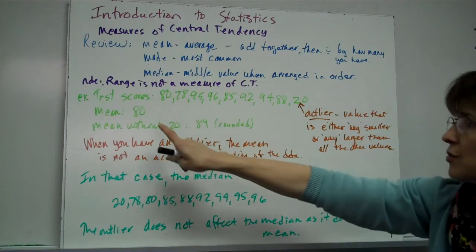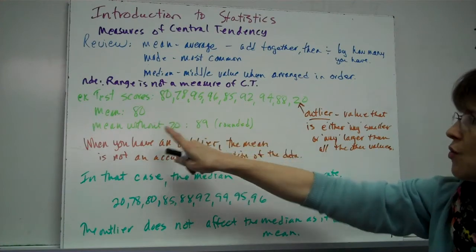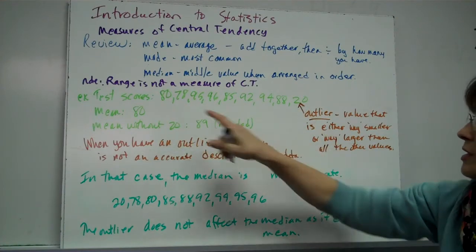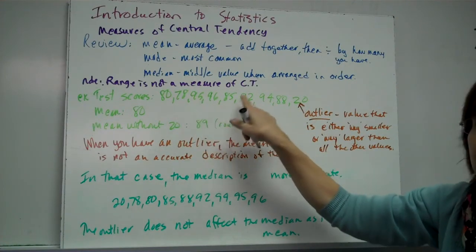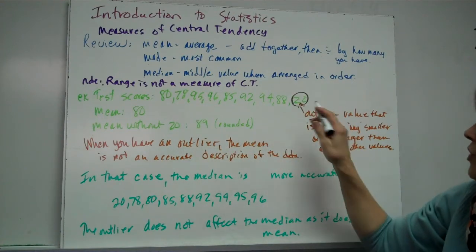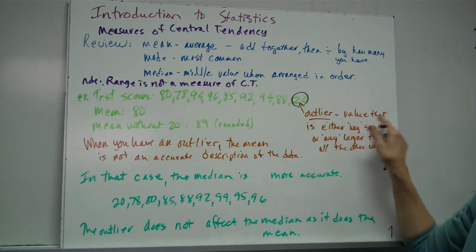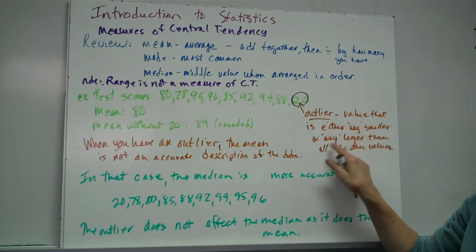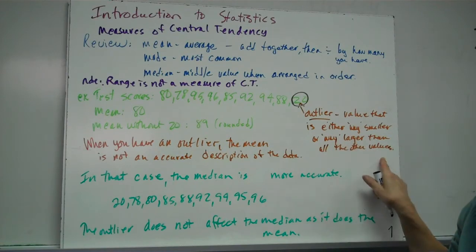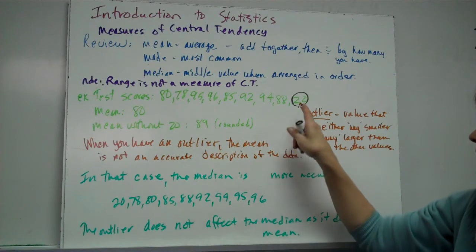So, for example, you have test scores. You see all these test scores. If you get the mean of all these test scores, you get 80. Well, this number, if you notice, if you look at them closely, these are all around 80, 90, maybe 170. But then you have a 20, somebody that didn't do so well. We call that guy an outlier, that value, an outlier. And that's the value that is either way smaller or way larger than all the other values. He's out there. He's out lying out there.